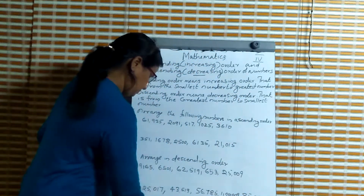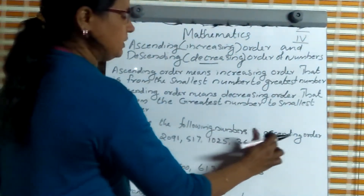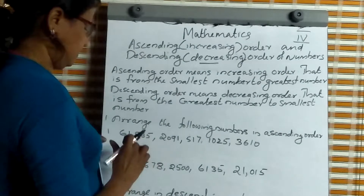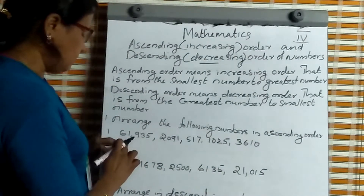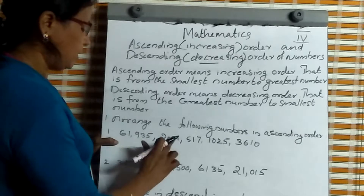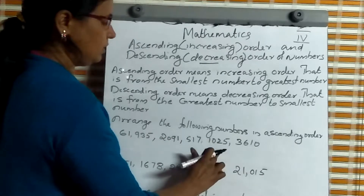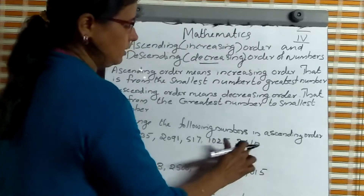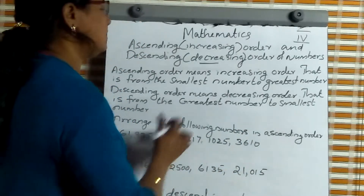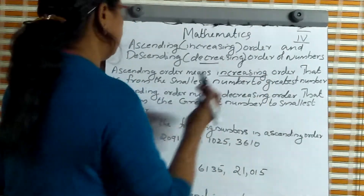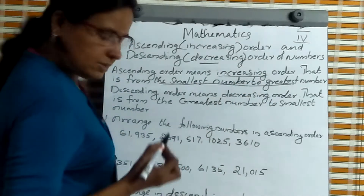Look at the board. Arrange the following numbers in ascending order. The numbers are: 61,935; 2,091; 517; 1,025; 3,610. Arrange these in ascending order, which means increasing order — smallest number to greatest number.